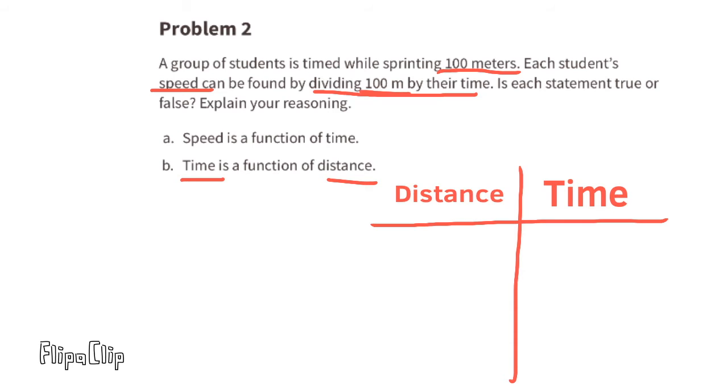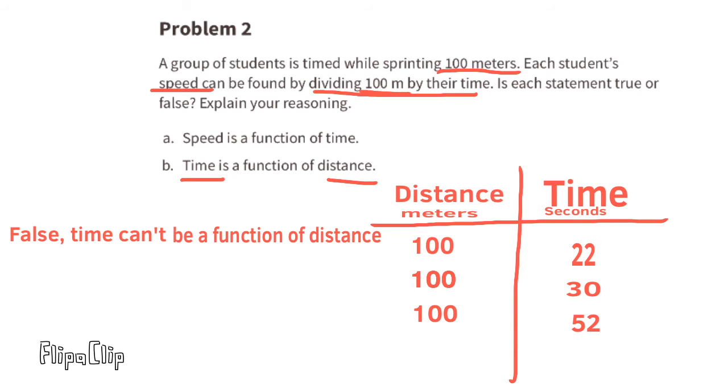B. Time is a function of distance. Imagine the input is distance and the distance was 100 meters for all the runners. If the time for one runner was 22 seconds and the second runner's time was 30 seconds and the third runner's time was 52 seconds, what would the function be? We can't have the same input but have a different output. So this is false. Time can't be a function of distance.